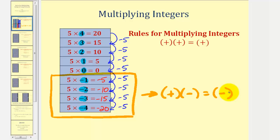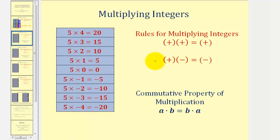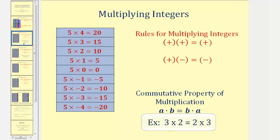Let's formalize this on the next slide. Here's the new rule we just discovered: a positive times a negative is negative. But because of the commutative property of multiplication — which says a times b equals b times a — for example, three times two equals six and so does two times three. So because we can change the order of multiplication without affecting the product, if a positive times a negative is negative, then a negative times a positive must also be negative.